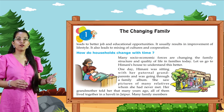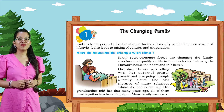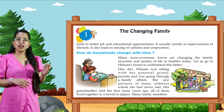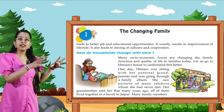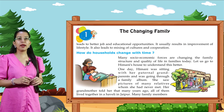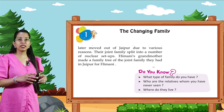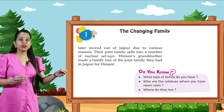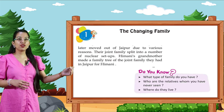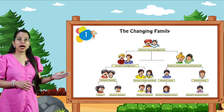One day Himani was sitting with her paternal grandparents and was going through a family album. She saw pictures of many relatives whom she had never met. Her grandmother told her that many years ago all of them lived together in a haveli in Jaipur. Many family members later moved out of Jaipur due to various reasons. Their joint family split into a number of nuclear setups. Himani's grandmother made a family tree of the joint family they had in Jaipur for Himani. Look at the picture of the family tree made by grandmother.